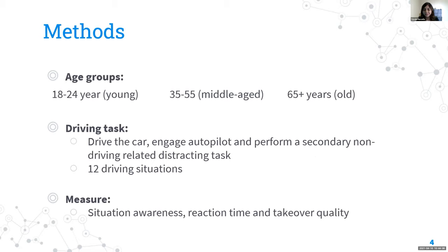Participants will be ages 18–24 as the young group, 35–55 as middle-aged, and 65 and older as the old group. For driving trials, participants do not have to monitor the system but will take over control when the system sends a takeover warning signal. They drive the simulator car, engage autopilot, and perform a secondary non-driving distraction task — including an auditory n-back task, surrogate reference task, and critical tracking task.